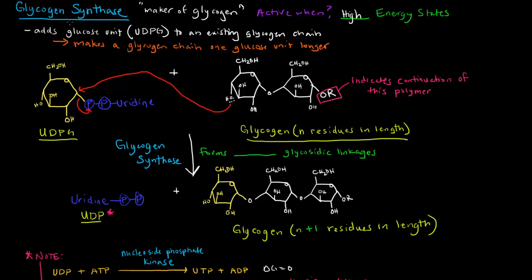So what glycogen synthase does, it actually catalyzes a very particular reaction. The reaction that it catalyzes is it adds a glucose unit in the form of UDPG, which we just created, to an existing glycogen chain. So it makes a glycogen chain one glucose unit longer. So how exactly does it do that? Well, this is the UDPG that we just created here. This glucose with this uridine diphosphate, UDP glucose. Now, this here is what I've drawn here is a glycogen chain that's N residues in length. I've only drawn two residues here because I didn't want to spend too much time drawing out a bunch of different glucoses. But you can imagine that this chain goes on further and further, which is actually why I drew this OR here. It indicates the continuation of this polymer in this direction to the right.